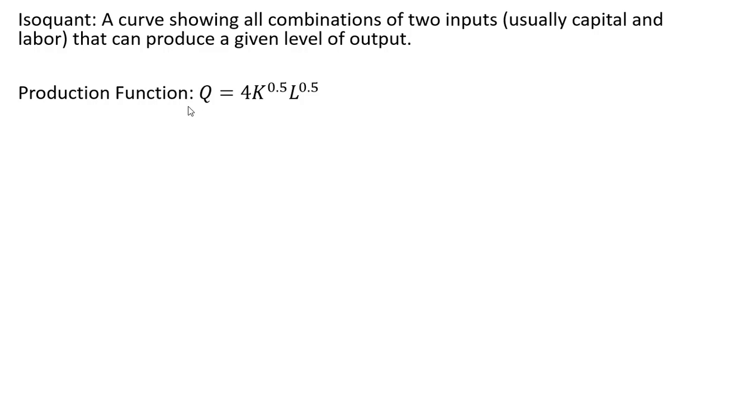Here we have a production function for a firm, Q = 4K^0.5L^0.5, where Q is output, K is units of capital, and L is units of labor. We are interested in deriving and graphing an isoquant for 16 units of output, showing all combinations of capital and labor that can produce 16 units of output.